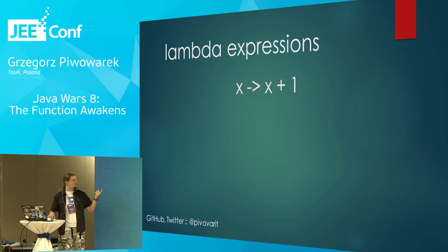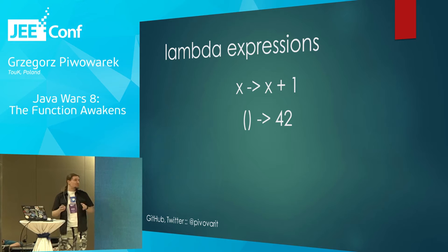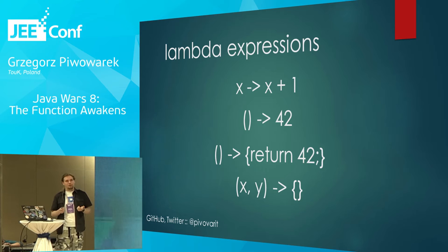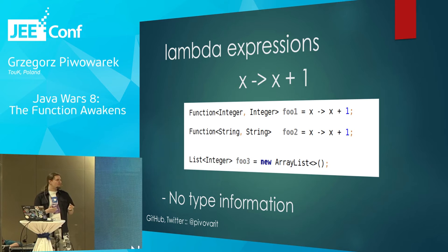Lambdas come in many different forms and sizes. For example, there can be an action that returns a value. On the right side we don't need to specify only values — we can specify blocks of code, but then we need to remember about manually returning our values. We can also have more than one argument on the left side. As you can see, the same lambda expression can be either a function that performs an action on integers or a function that performs an action on two strings, depending on the context.